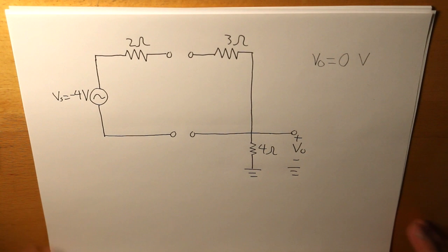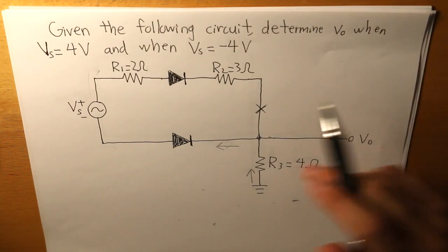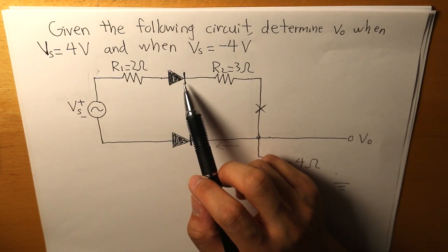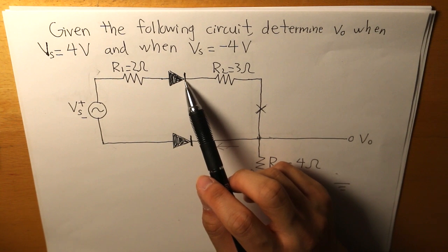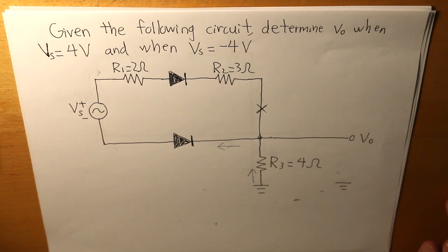Pretty tricky, right? But the only thing that we need to understand is that the current has to travel at the direction at which the diode is facing. And the rest is history. I hope you guys enjoyed this video, and I will see you in the near future.